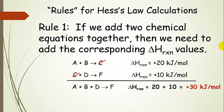We have a couple of rules for Hess's Law calculations — these are ways to manipulate equations and the associated delta H reaction. There are three of them. The first one: if we add two chemical equations together, then we need to add the corresponding delta H reaction values. This is a really central rule, and a lot of times we're going to do this as our last step in a Hess's Law problem.